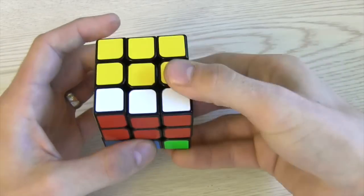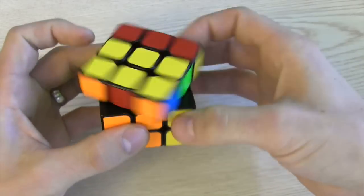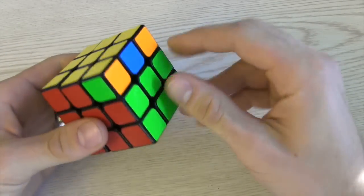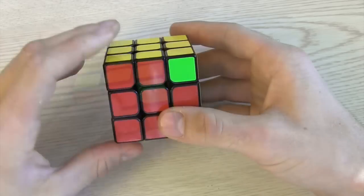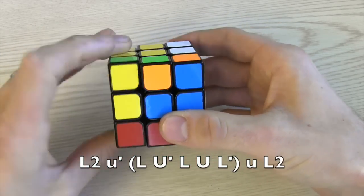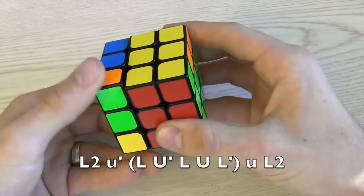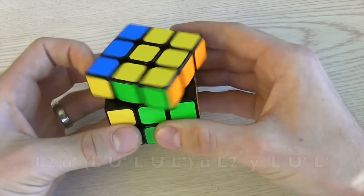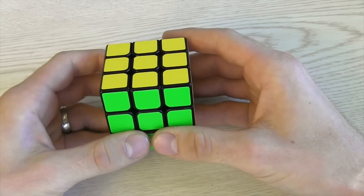You can guess the final one which is just the reverse of the left hand version. For the C version you put the headlights to the right and have the pair in front of you with L2 small U prime L U prime L U L prime and then small U L2. Turn to where the headlights were originally and do L U prime L prime.